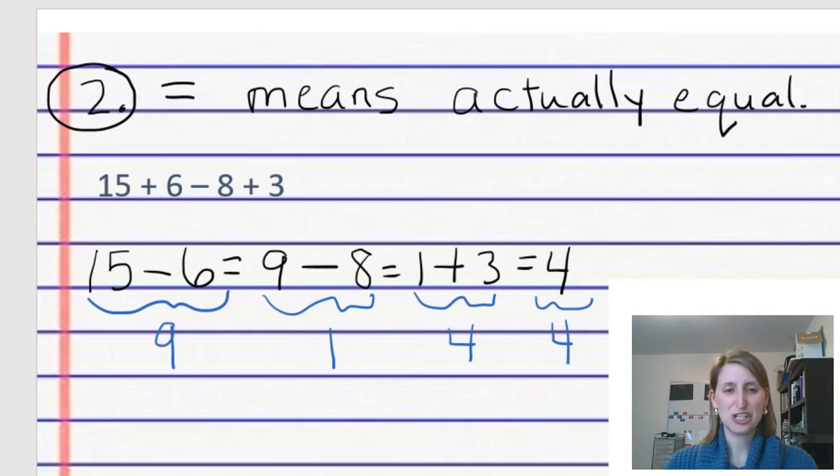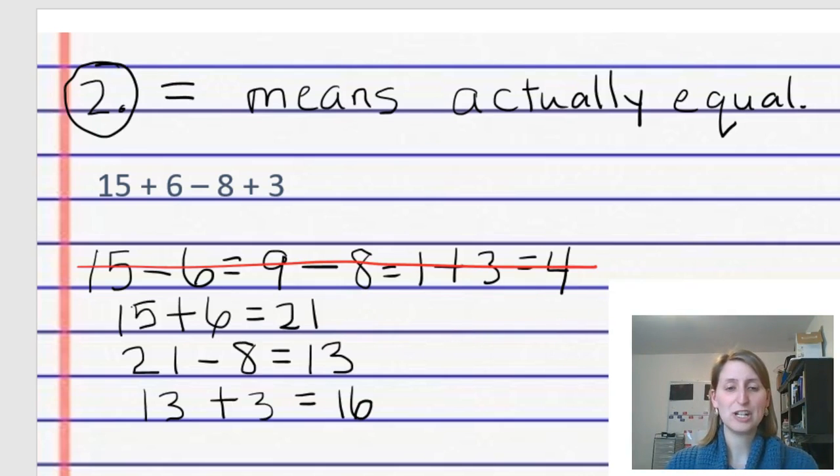But this isn't actually true. Here we have 15 minus 6 actually equals 9, 9 minus 8 actually equals 1, 1 plus 3 equals 4. Those things are not all equal to each other, and so instead what we want to do is to teach kids to break those up so that everything that's connected by an equal sign is actually equal to each other. 15 plus 6 equals 21, 21 minus 8 equals 13, 13 plus 3 equals 16. This idea of keeping the two sides of the equal sign balanced really pays off later when they get to algebra.